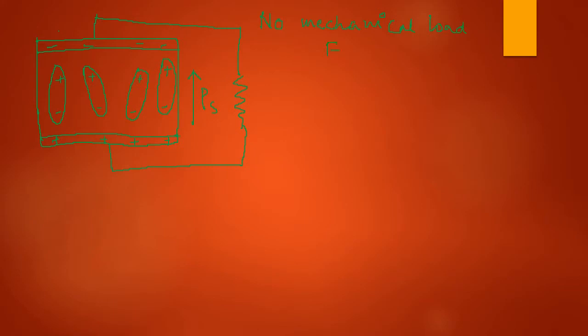If you have no mechanical load — suppose you have not applied any — how will the circuit look? This will be connected to an external circuit and here I have a load resistance RL. First condition: no mechanical load is applied. Stress is zero. This is your load resistance RL in the external circuit. So the current through RL is now zero.